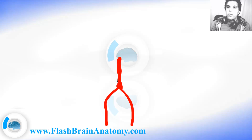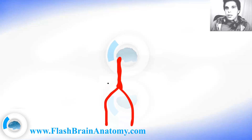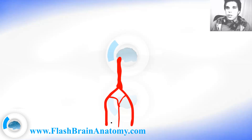Before they join here to create this basilar artery, they give two arteries — two smaller arteries — that join and create the anterior spinal artery. This is the anterior spinal artery.